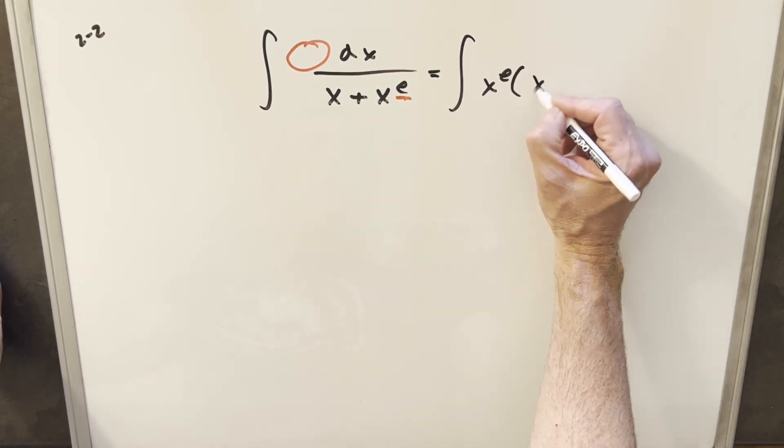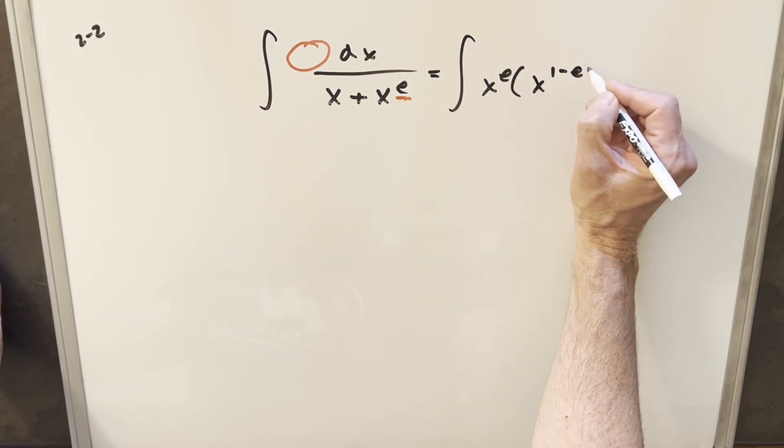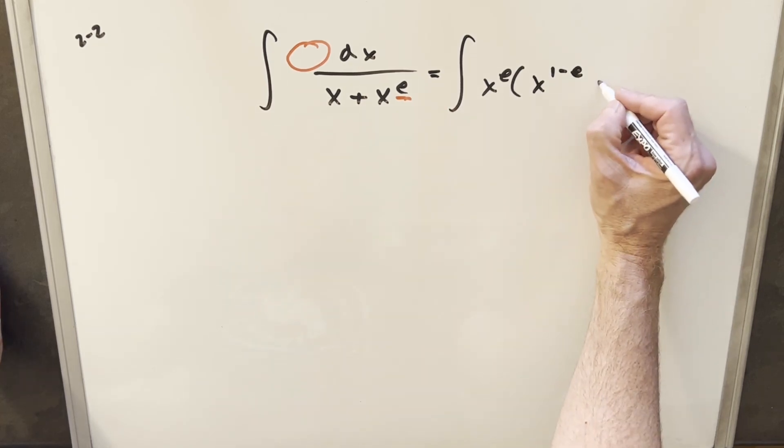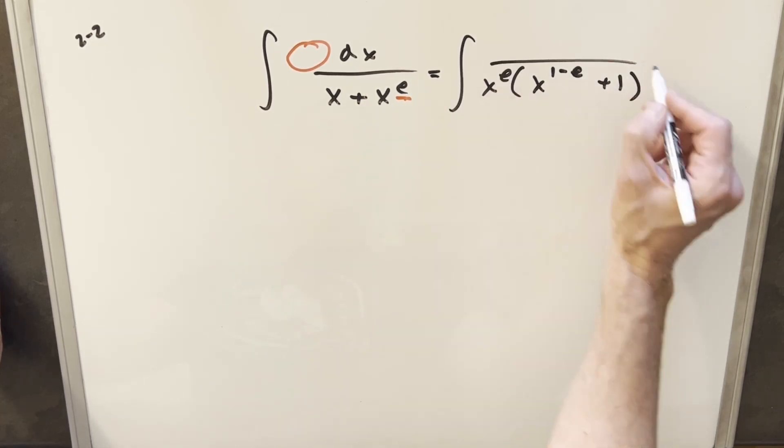For this first term, our x is going to turn to x one minus e. Just noticing if you multiply this times this, you get back to just x. And then our second term here is going to be just a plus one.